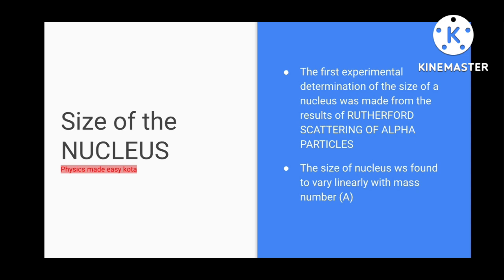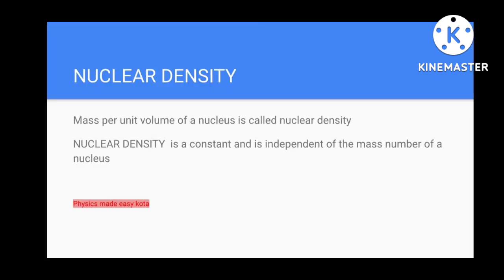If the mass number is more, then the size of nucleus will be more. Next, what about the density? We all know density is always mass per unit volume. For the nuclear density, mass per unit volume of a nucleus is called the nuclear density. Nuclear density is a constant and it is independent of the mass number of a nucleus.